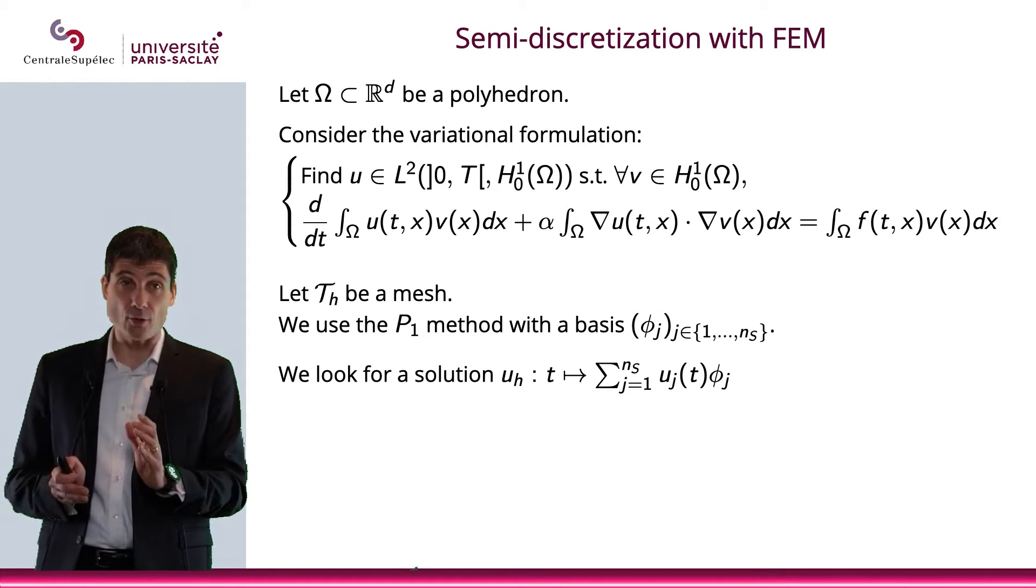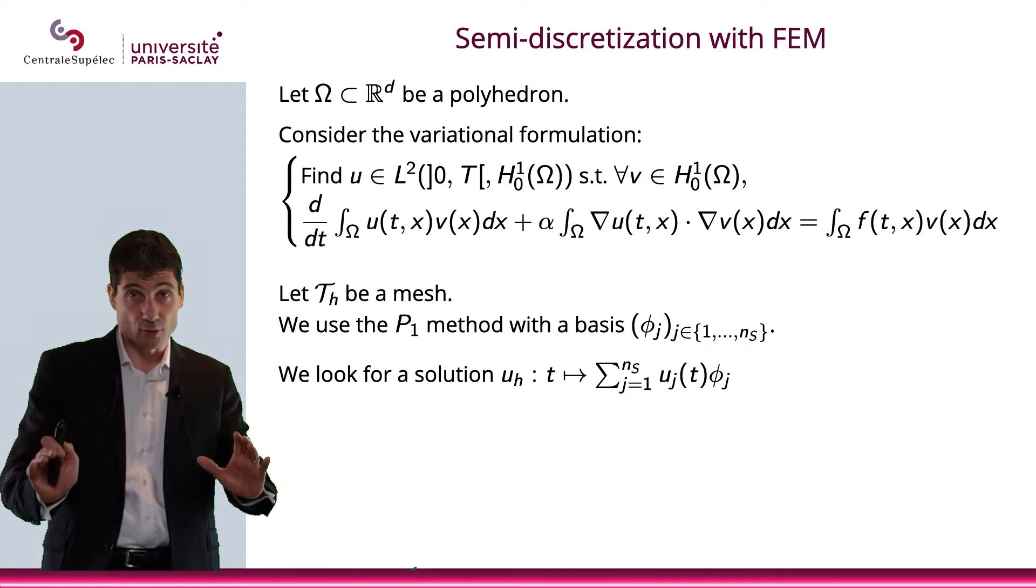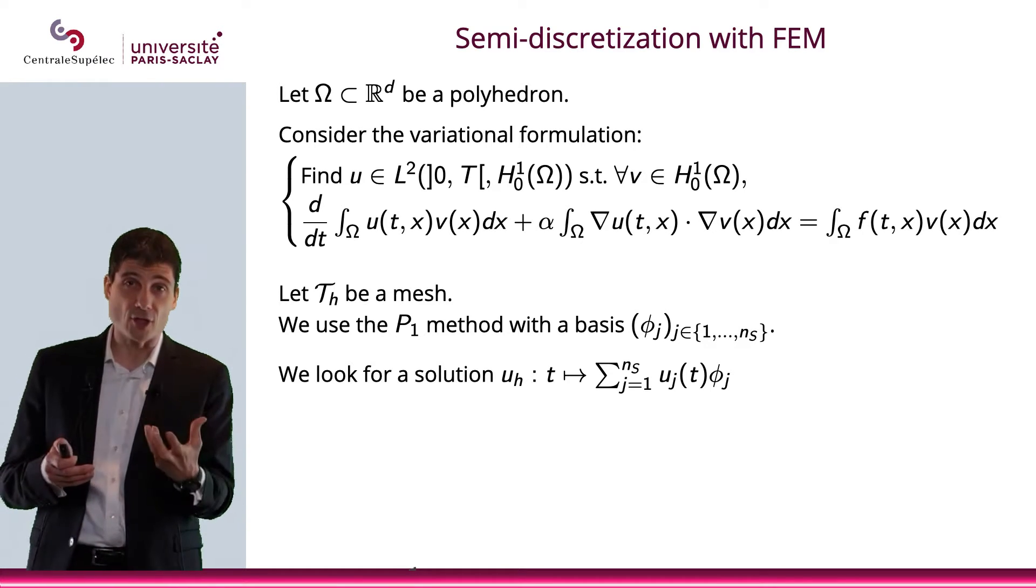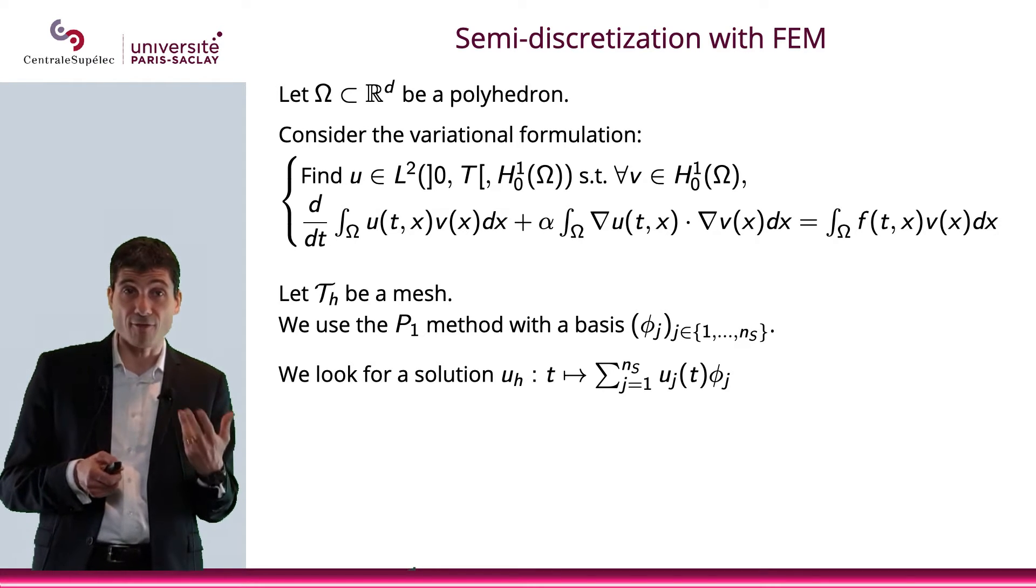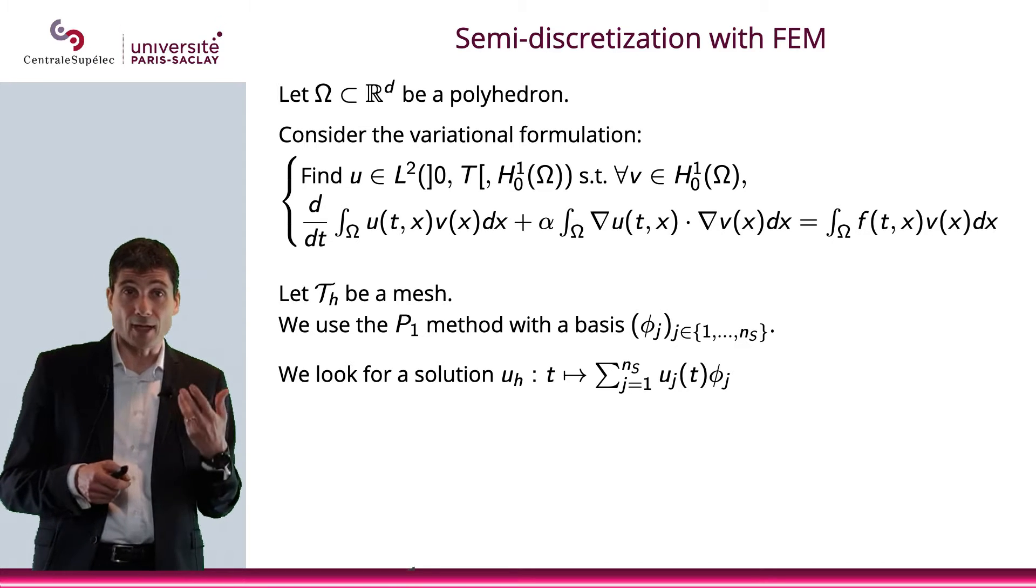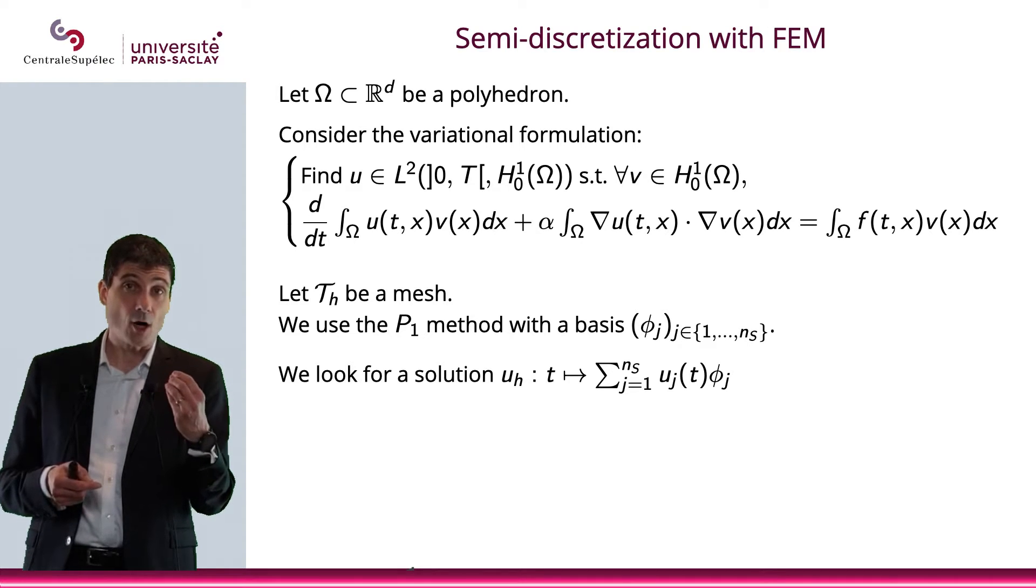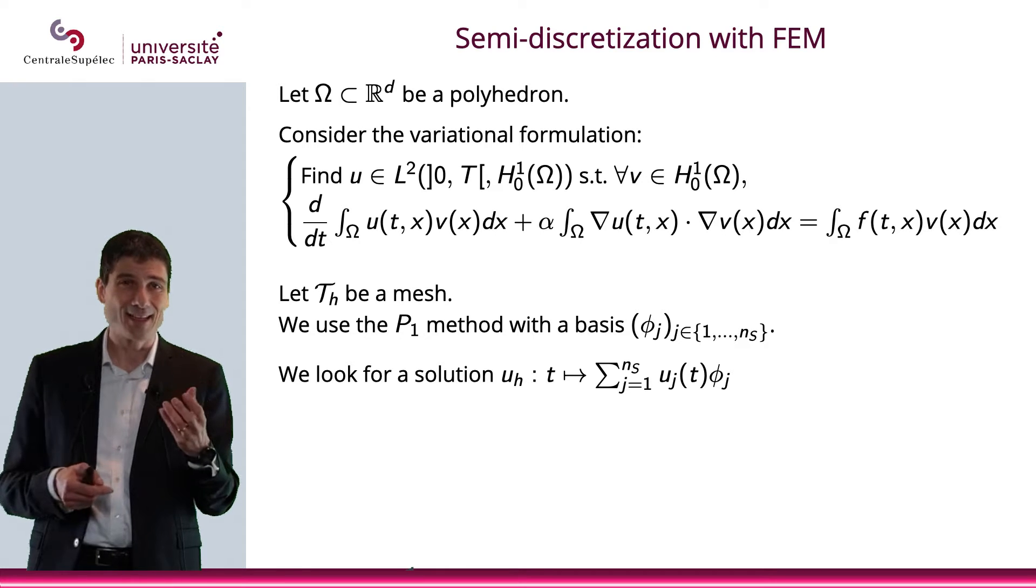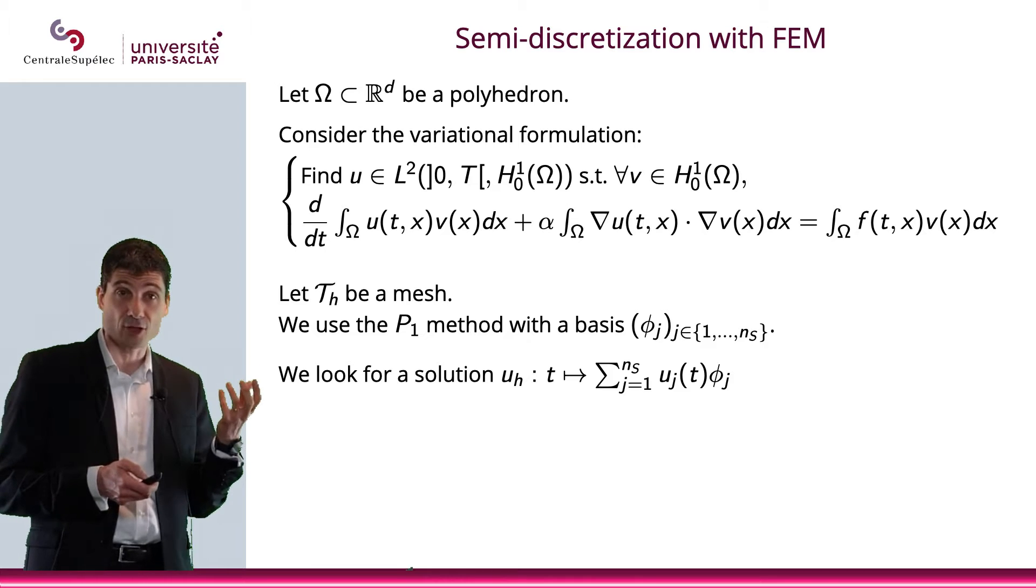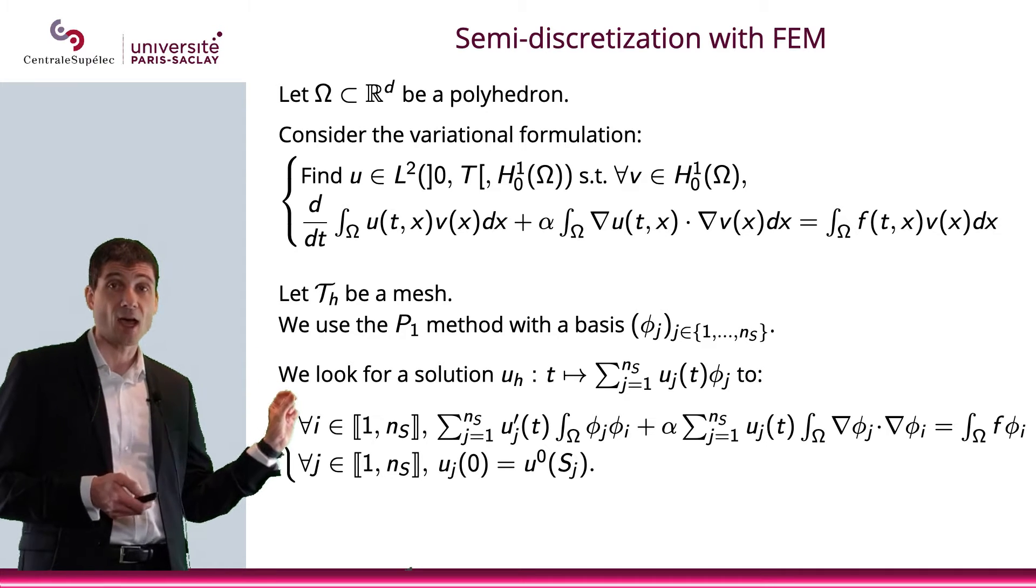Now what we will do is to look for a solution, which means, again, the finite element method: you project your solution onto that space with the basis, and you look at the coefficients. Up to now, in chapter 5, the coefficients were just numbers, real numbers. Now what we're going to do is consider this. Rather than considering numbers, we're going to take functions that depend on t, that depend on the time variable. So the parameters, the components, the coefficients in front of φ_j will be u_j(t).